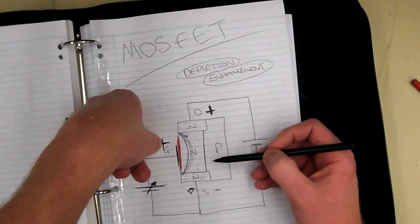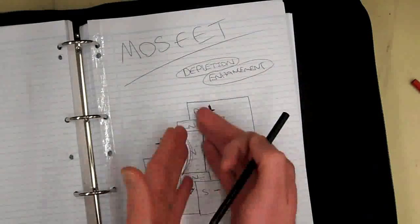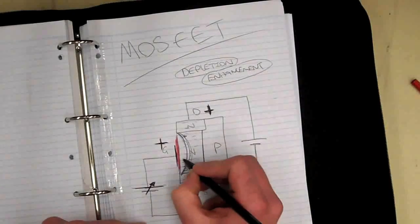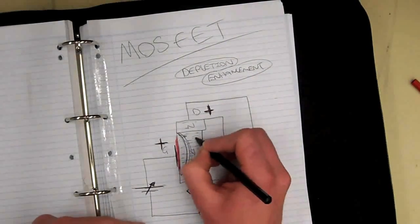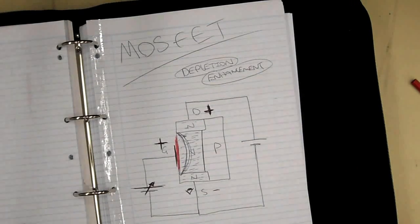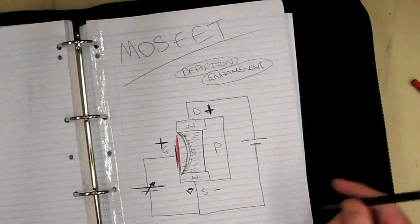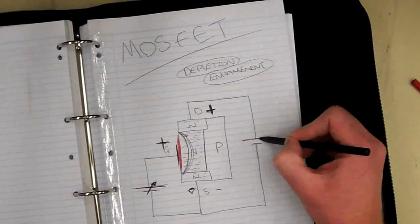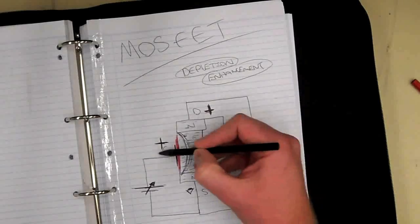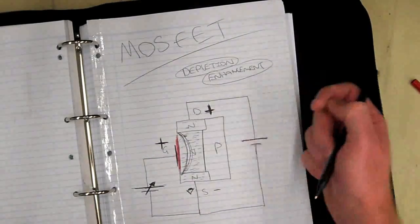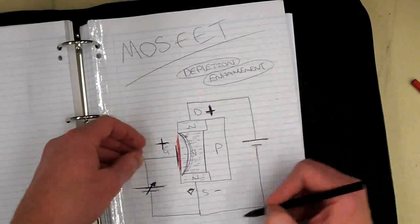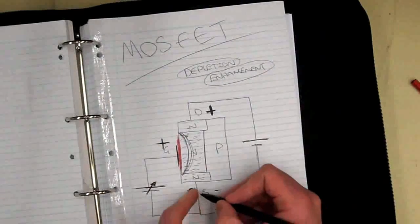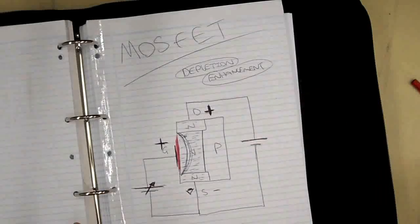The electrons are seeing both the positive drain potential and the positive gate potential, so they see a big attractive force. More electrons will want to flow into this channel — we've enhanced the channel. You could say we've widened it, but really we've just made the channel more attractive. All the electrons still flow through to the positive power supply because the gate is an insulated region — no current flows to the gate. We've just made the channel look even more attractive by placing a positive potential there, so more electrons flow, but they all go through the channel.